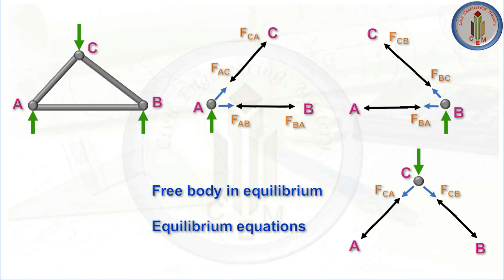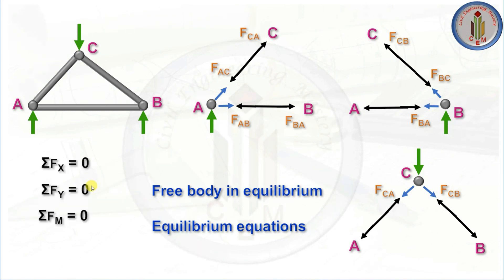Since we need to draw the free body diagram, the direction of forces must be assumed. The joint force and member force are opposite in direction, so the two forces cancel each other. If we rejoin member AC to joint A, the sum of internal forces must vanish for the entire truss to be in equilibrium. We check two equations: summation of Fx = 0 and summation of Fy = 0, since the moment equation is automatically satisfied.